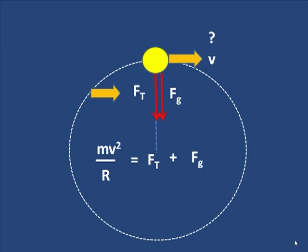So if we set this Ft equal to zero, if we remove it and then put zero into the equation, what we end up with is mv squared over r is equal to zero plus Fg, or mv squared over r is simply equal to Fg which is equal to mg, the weight.